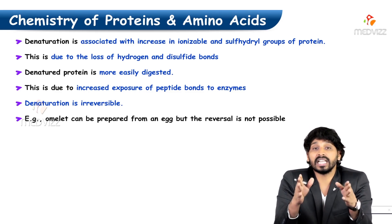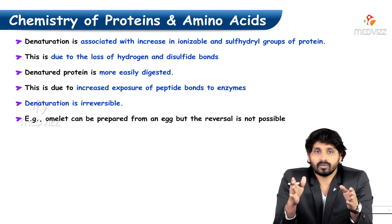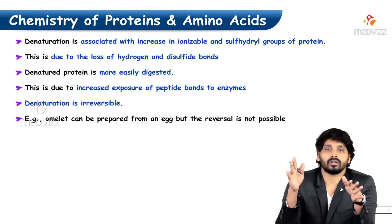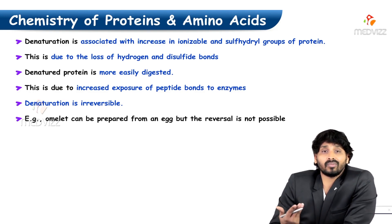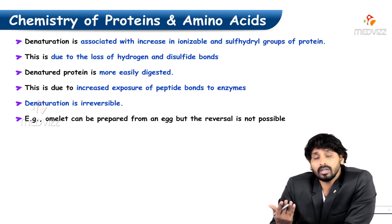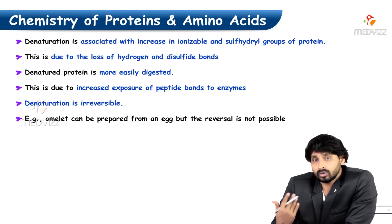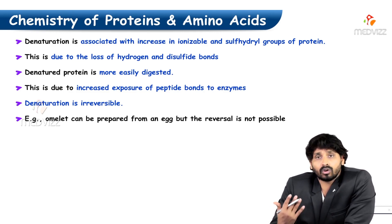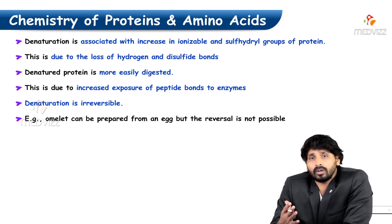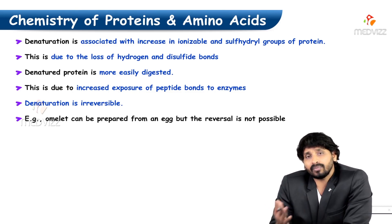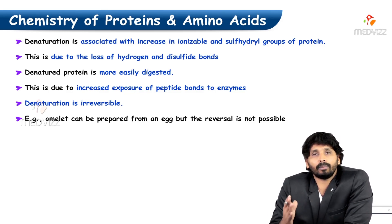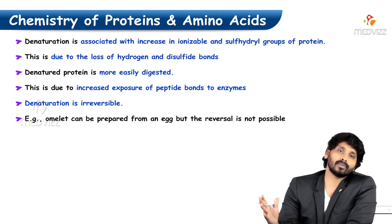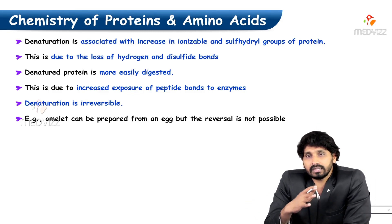Heating is a physical agent that causes denaturation of protein so that it can easily undergo digestion. Once the protein is denatured, the peptides are exposed to enzymes in the gastrointestinal tract. Cooked protein degrades into polypeptides, exposing peptide linkages so digestive enzymes can further degrade them into individual amino acids, which then enter the amino acid pool present in the body.